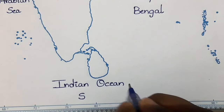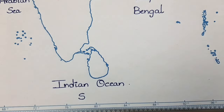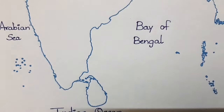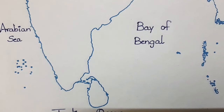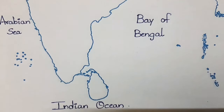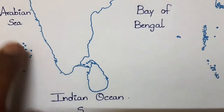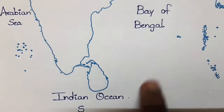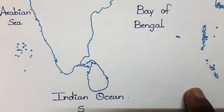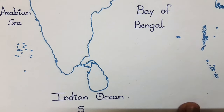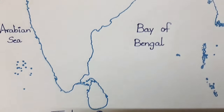So these three surround our country India: on the right side the Bay of Bengal, on the left side the Arabian Sea, and to the bottom the Indian Ocean.